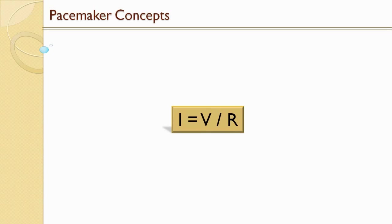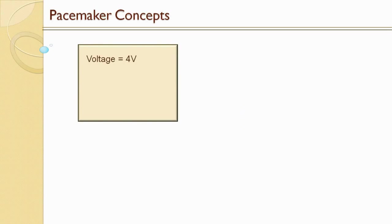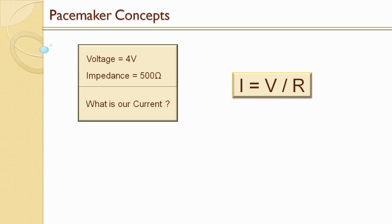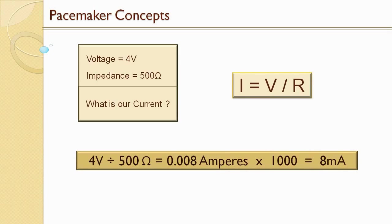Let's run through a couple of examples. If our voltage is programmed to 4 volts and our impedance is measured at 500 ohms, current equals voltage divided by resistance: 4 volts divided by 500 ohms gives us 0.008 amperes, or 8 milliamps. I'm going to go through these examples kind of quick, but when I'm done I'll put them all up beside each other so you can see what I'm trying to get at.